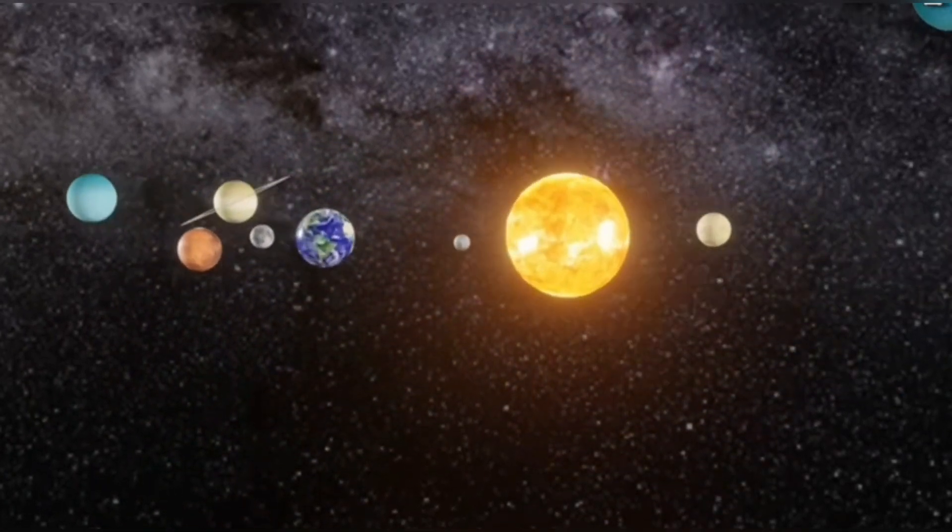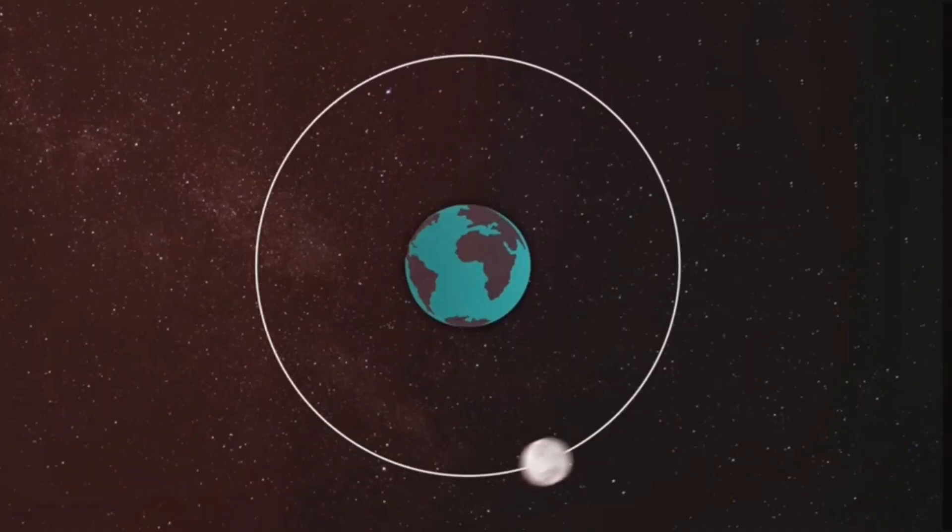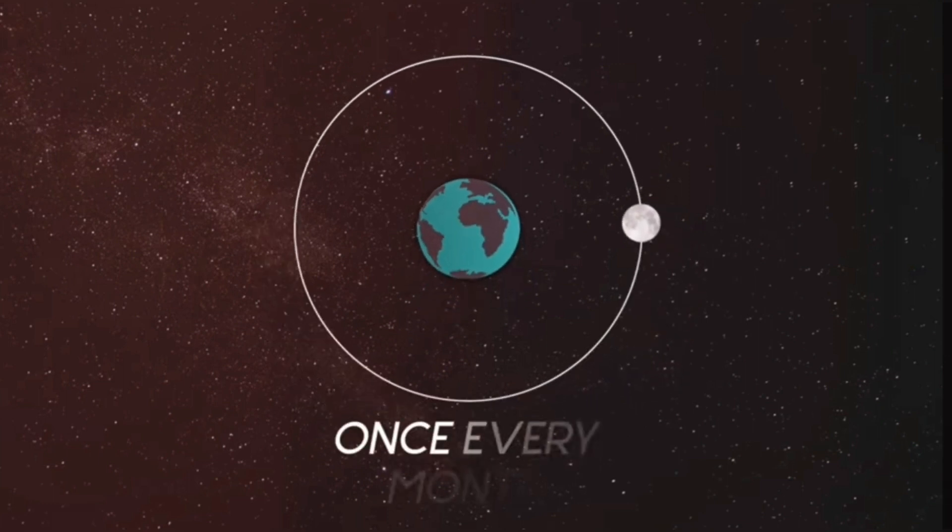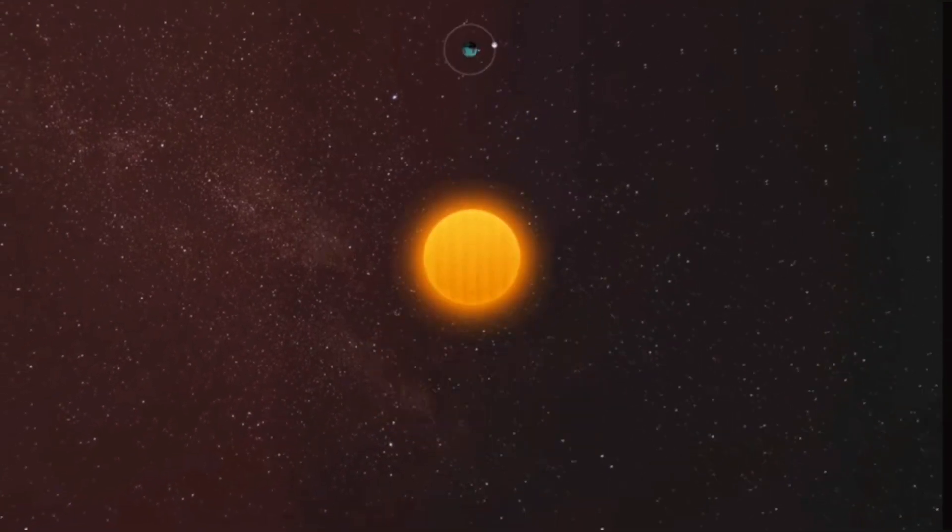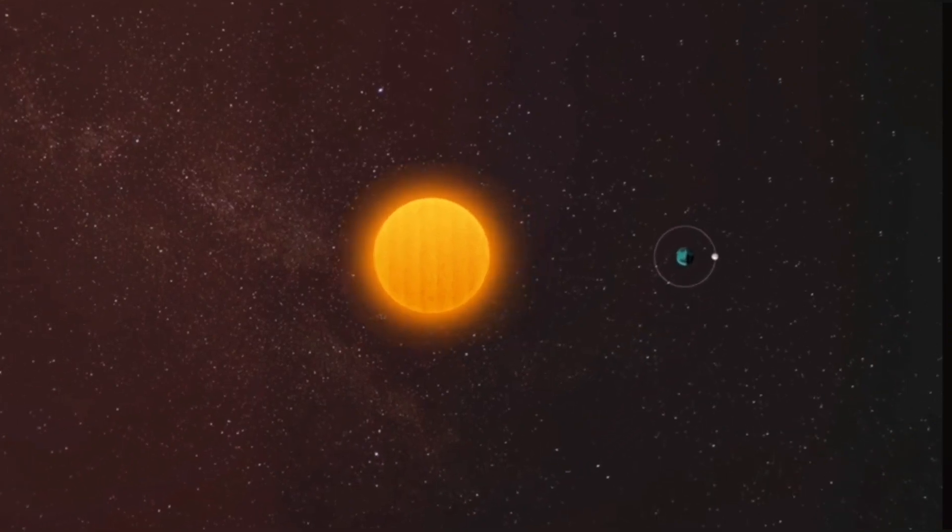The Moon also revolves around the Earth and this cycle takes one full month. This is how the process of revolution and rotation of Earth and Moon around the Sun takes place.